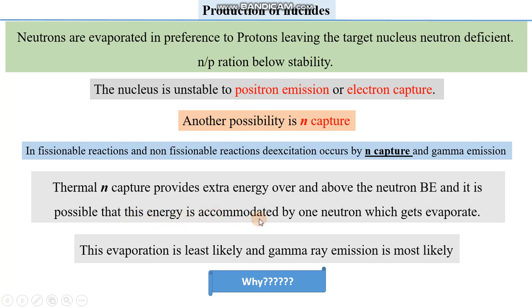It is possible that this energy is accumulated by one neutron, which then gets evaporated. If the energy of the thermal neutron is accumulated by a single neutron inside the nucleus, that neutron will be evaporated. If the thermal energy is distributed among more neutrons and the distributed energy exceeds the binding energy of those neutrons, then multiple neutrons are also expected to evaporate, along with emission of gamma radiation. However, this evaporation is the least likely outcome, while gamma ray emission is the most likely.